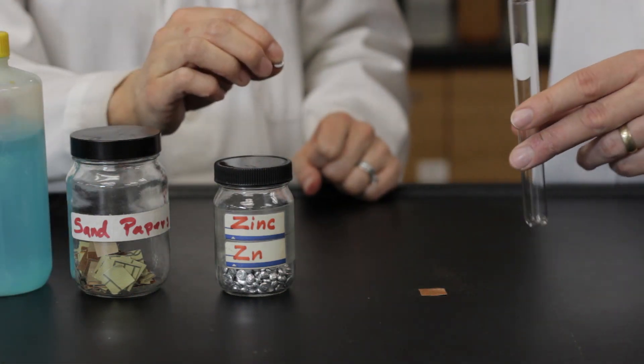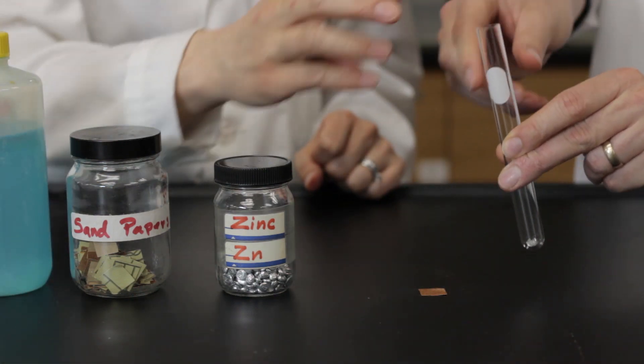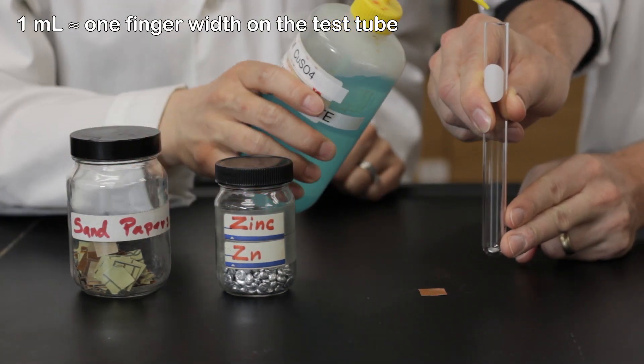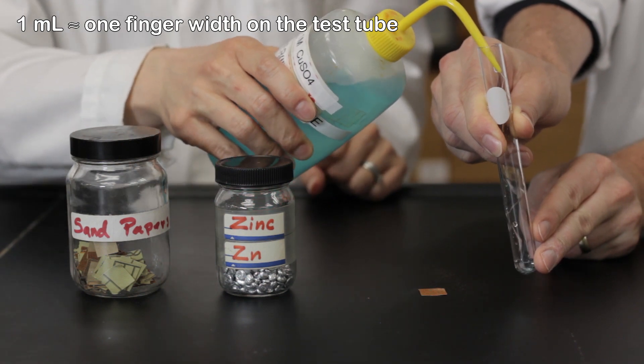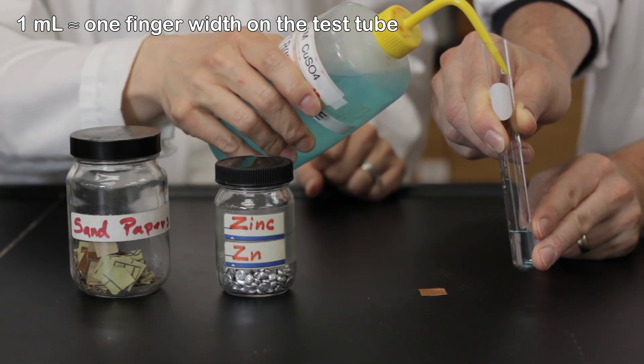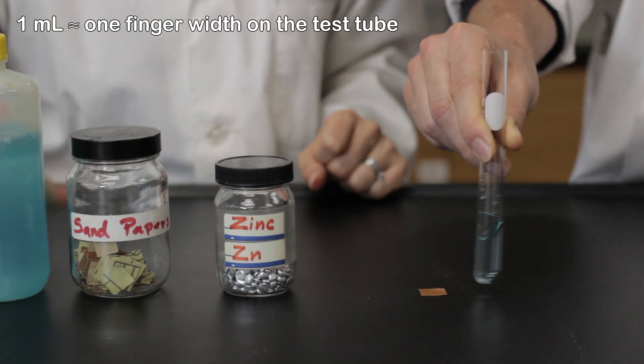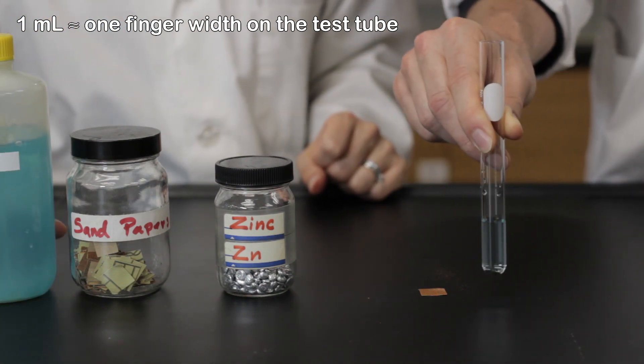For single replacement reactions, in the test tube, mix 2 milliliters of solution with a strip of metal. There's no need to use a graduated cylinder, you only need approximate volumes. Instead, 1 milliliter is about 1 finger width on the test tube.